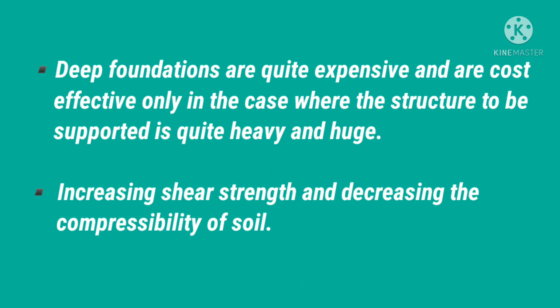The main objective of ground improvement is to improve the characteristics of the soil at the site. It usually consists of increasing the shear strength and decreasing the compressibility of the soil, so that the bearing capacity of the soil is increased and the settlements of the structures built on it are reduced. Sometimes the aim is to decrease the permeability of the soil.